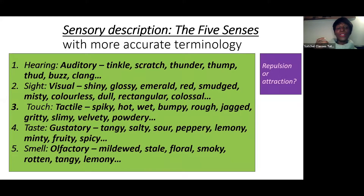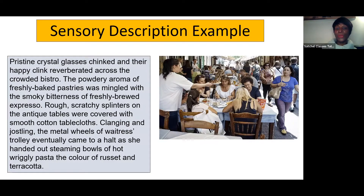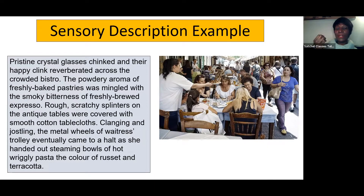You could pause the webinar and think about different words for hearing, smell, touch, taste, sight, and colour. Here is an example of sensory description used effectively: 'Pristine crystal glasses chinked and their happy clink reverberated around the crowded bistro. The powdery aroma of freshly baked pastry was mingled with the smoky bitterness of freshly brewed cappuccino. Rough and scratchy splinters on the antique tables were covered with smooth cotton tablecloths. Clanging and jostling, the metal wheels of the waitress's trolley eventually came to a halt as she handed out steaming bowls of hot wriggly pasta, the colour of russet and terracotta.'